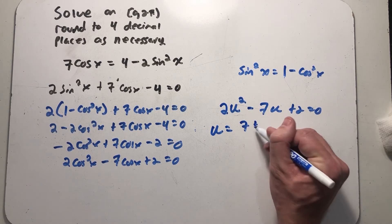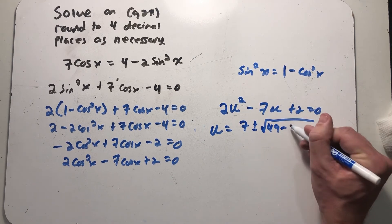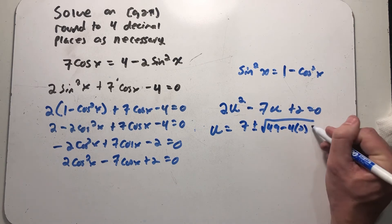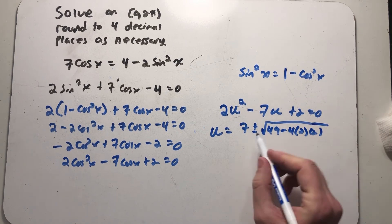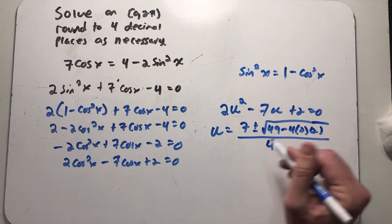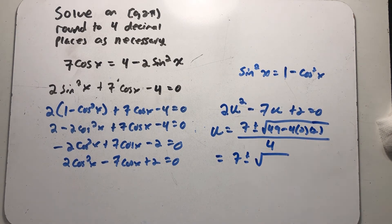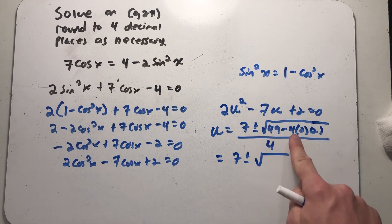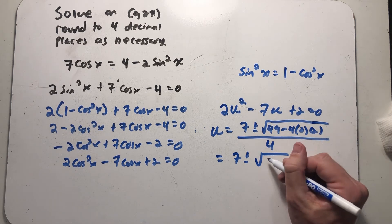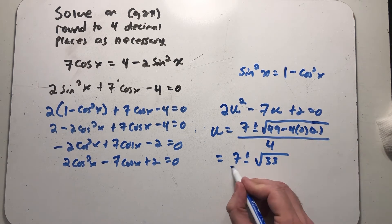Opposite b plus or minus the square root of b squared minus 4 times a times c all over 2a. Alright so I have 7 plus or minus the square root of, let's see here, 49 minus 16 is 33 over 4.